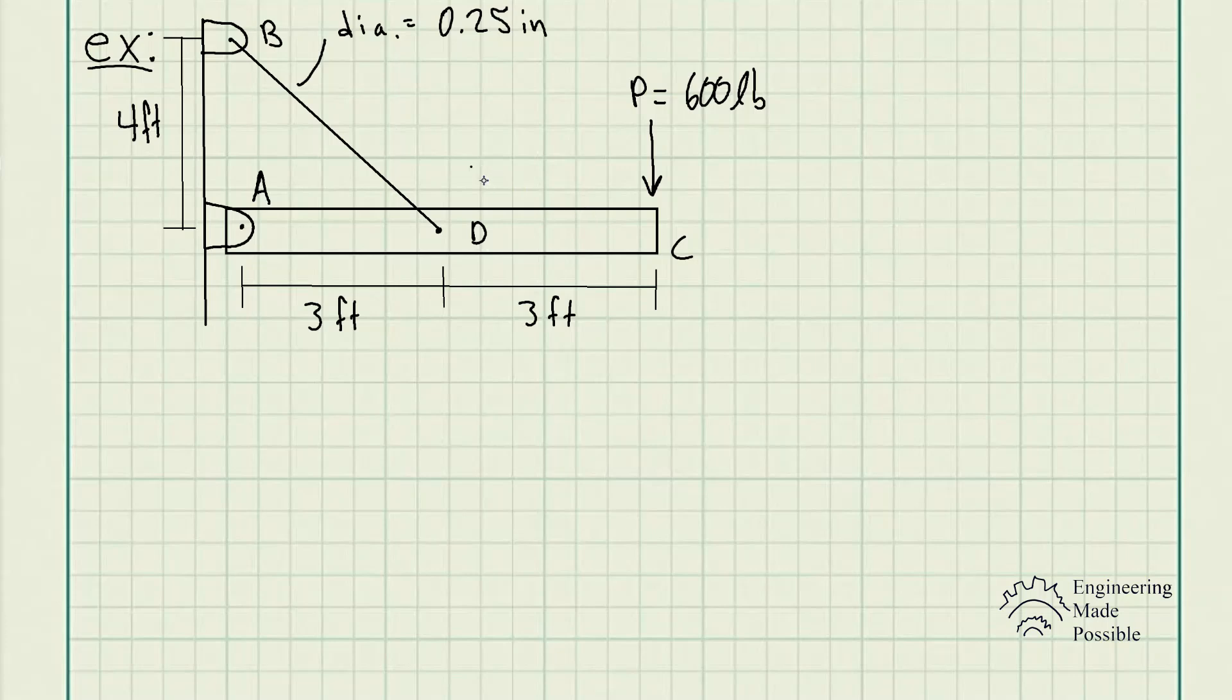So here we're given the diagram, and we know the material is A36 steel. In this case, we have the modulus of elasticity being equal to 29 million pounds per square inch. We know the diameter being a quarter inch, and we have this external load P of 600 pounds being applied at the end of this pipe.